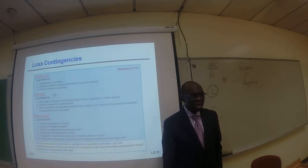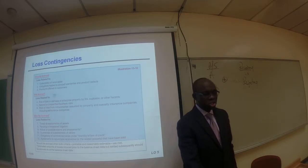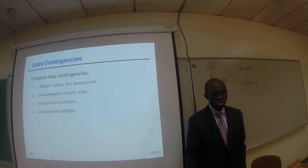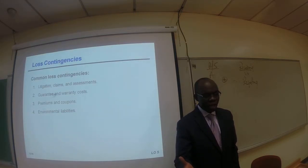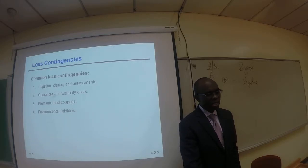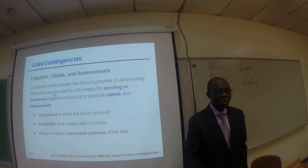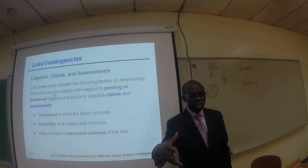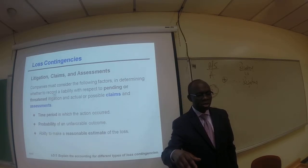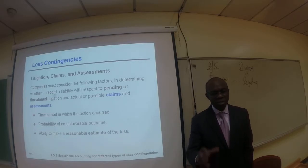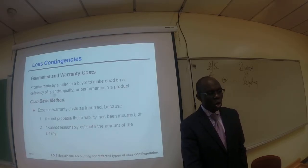Here are some examples of loss contingencies — you can review which are usually accrued and which are not. Common loss contingencies include litigation claims and assessment, guarantee and warranty costs, premiums and coupons, and environmental liabilities. For litigation, the key factors in determining whether to record a liability are: the time period in which the action occurred, the probability of an unfavorable outcome, and the ability to make a reasonable estimate.